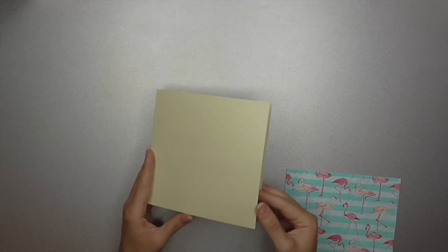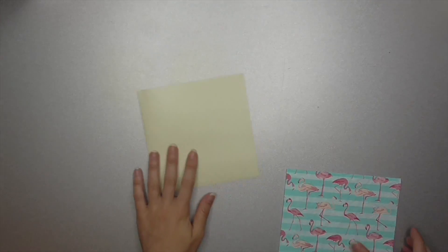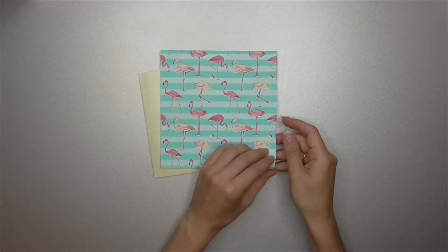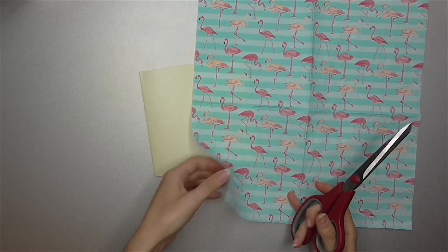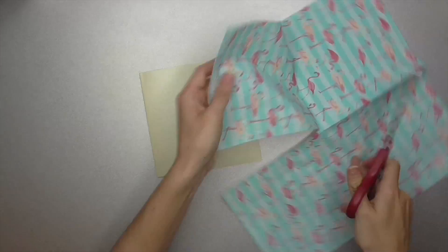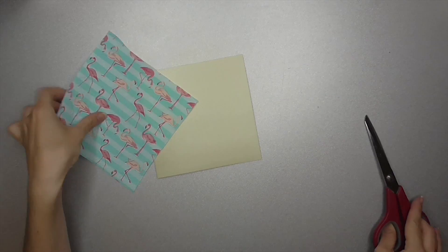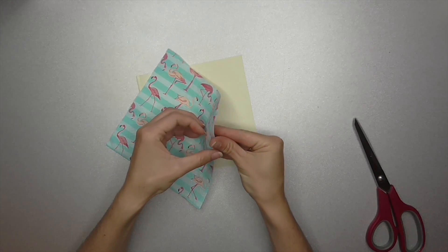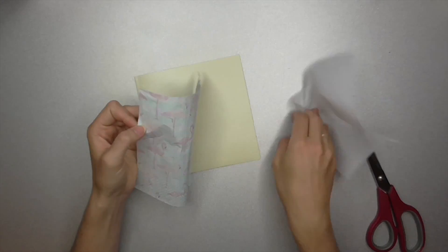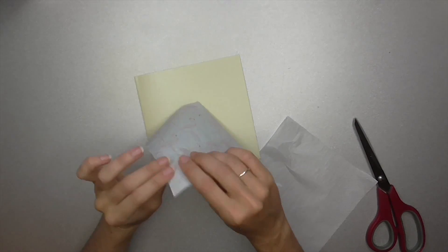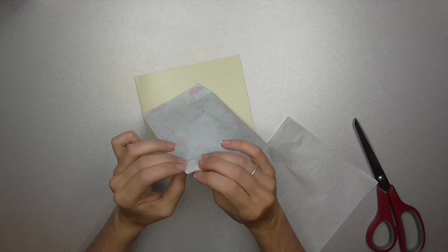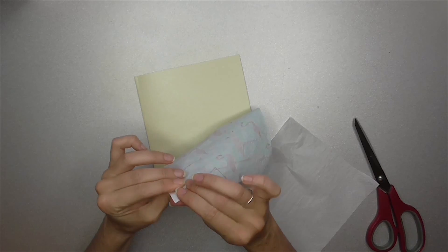I will start with the ivory card and the flamingo napkin. So what you want to do is cut out one square of it. I will separate the layers of the napkin. You only need the colored one. Usually there are two layers of white.